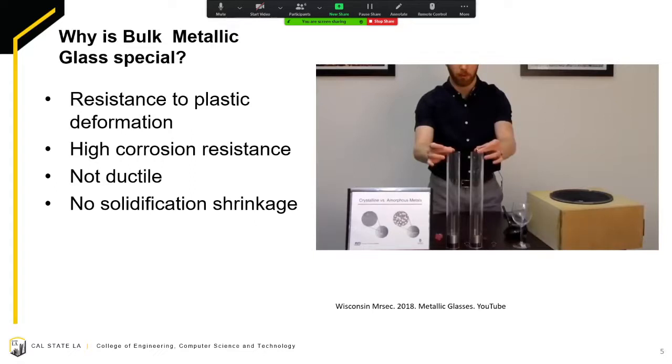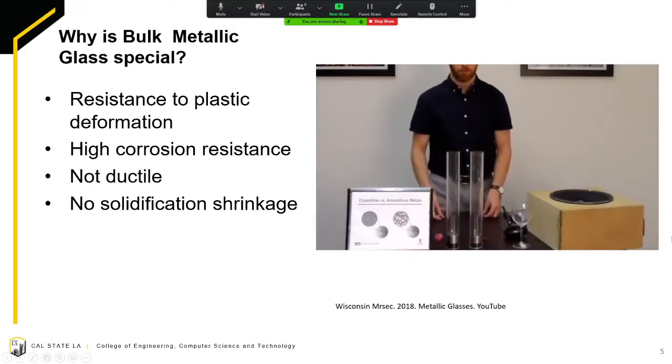Bulk metallic glass does not undergo solidification shrinkage like other metals so it is able to retain the shape of its mold. Due to it not having a crystalline structure, it is resistant to plastic deformation meaning that it will almost always bounce back to its original shape. It also has high corrosion resistance making it ideal to use in environments that could corrode other metals. BMG is also highly durable. This video shows how BMG's high elastic limit allows the ball on the right to continue bouncing longer than the ball on the left.